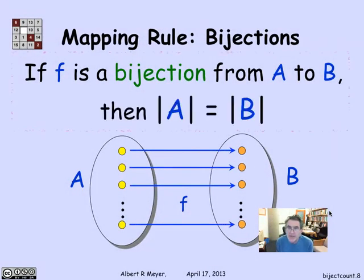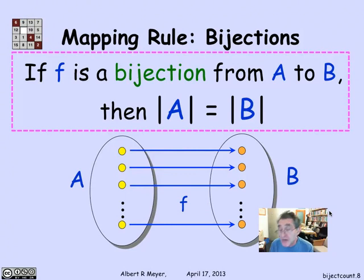With that practice using the basic sum and product rules, we can start applying and thinking about the bijection rules. The bijection rule simply says that if I have a bijection between two sets A and B, then they have the same size, at least assuming that they're finite sets.